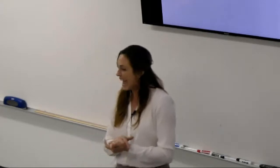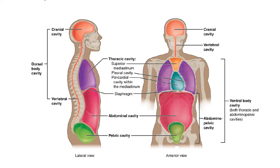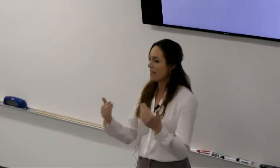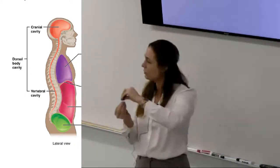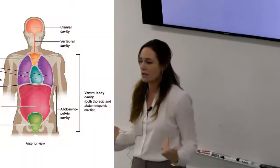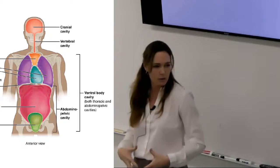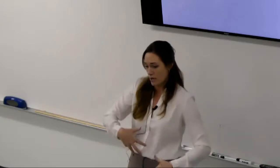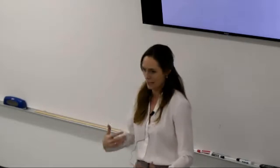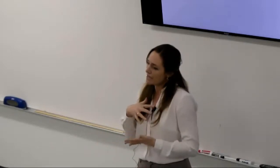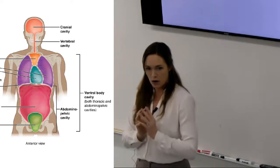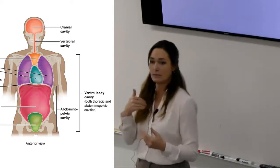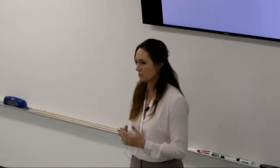Body cavities: inside we have a dorsal cavity and a ventral cavity — one in the back, one in the front. The dorsal cavity contains the cranial and vertebral cavities. The ventral cavity contains the thoracic and abdominopelvic cavities. The abdominopelvic breaks into abdominal and pelvic sub-cavities. The thoracic cavity, above the diaphragm, contains the pleural cavity for the lungs, the pericardial cavity for the heart, and the space in between is the mediastinum.